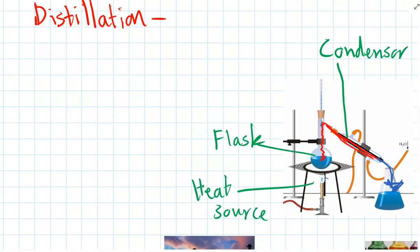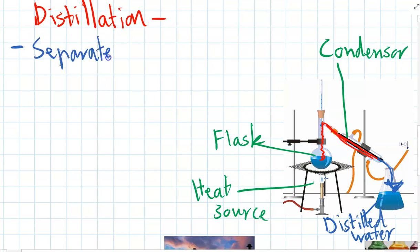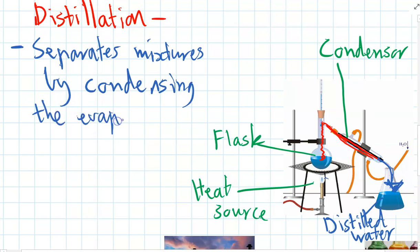So by the end of it, you have perfectly clear, pure water, which you might have heard before is called distilled water. So overall distillation, it separates mixtures by condensing the evaporated water. So it evaporates the water and then it condenses it again. So then whatever is left behind in the original flask, it will be separate from the pure water that you've collected in the other flask.